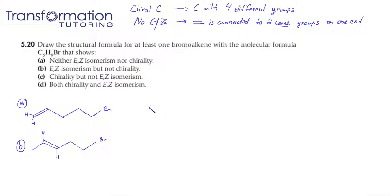Let's go ahead and go to C. So for C, we are asked to draw the molecule that does have chirality, but it does not have EZ isomerism. Well, we said the easiest way to get rid of EZ isomerism is to put the double bond at the end. So it's attached to two hydrogens and it cannot do EZ.